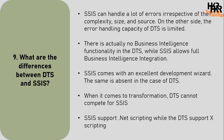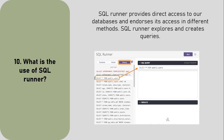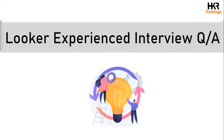SSIS comes with an excellent development wizard, which is absent in DTS. When it comes to transformation, DTS cannot compete with SSIS. SSIS supports .NET scripting while DTS supports VBScript. The last question of this part: what is the use of SQL Runner? SQL Runner provides direct access to our databases and supports access in different methods. SQL Runner explores and creates queries.